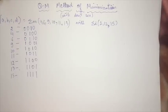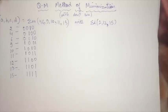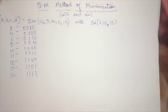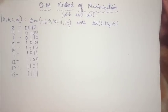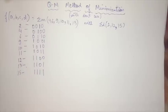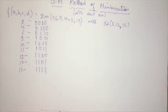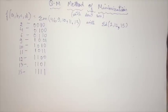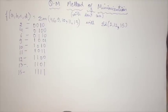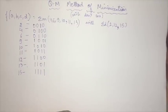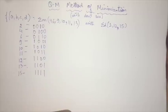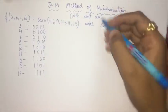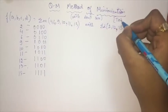Hello everyone. In this video we are going to learn the QM method of minimization of variables. We have all learned about K-maps, and they are really useful for solving boolean expressions, but in the case of expressions which have three, four, or more variables, it gets very tedious. So we use this QM method of minimization, which is also called the tabular method.